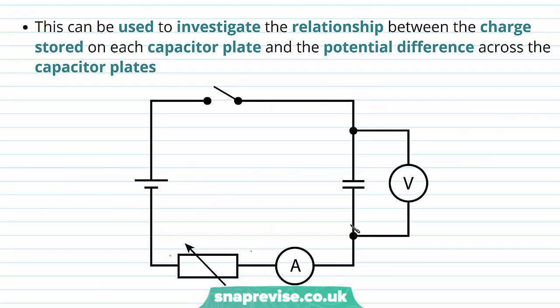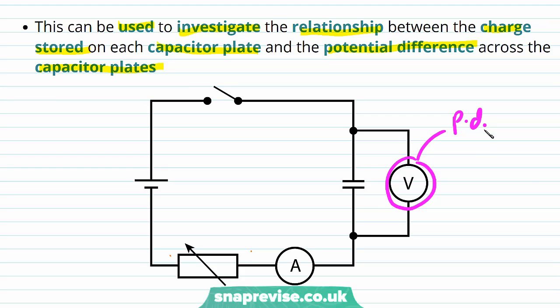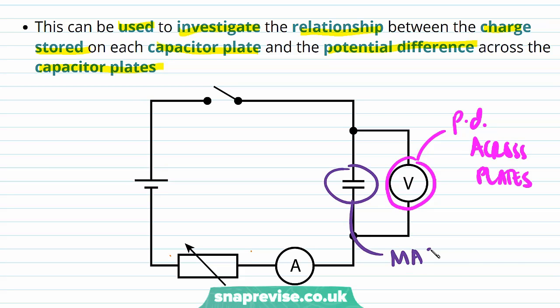This circuit can be used to investigate the relationship between the charge stored on each capacitor plate and the potential difference across the capacitor plates. We can measure the potential difference using the voltmeter, and we can also measure the magnitude of the charge stored on each plate.